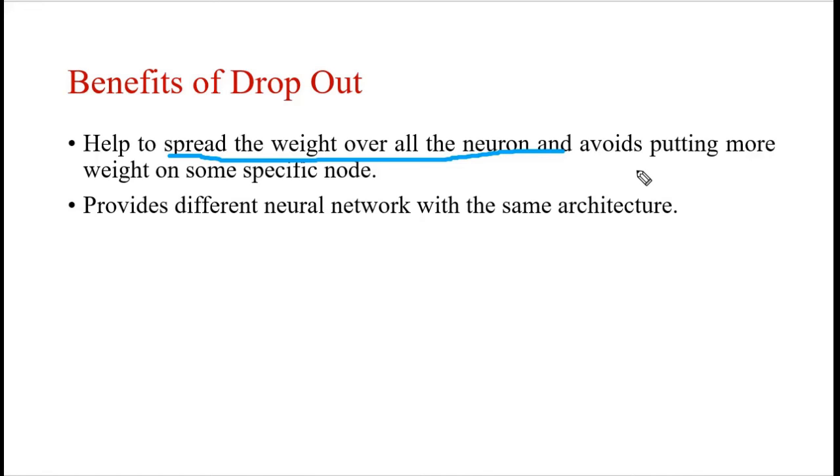Another benefit: by removing some neurons randomly with certain probability, we can get different neural networks. The original neural network is one, and the modified neural network after removing some nodes randomly will be a different one. We will get many different neural networks for the input data, which will be helpful to learn new things. Now let's try to include this dropout layer in our neural network.